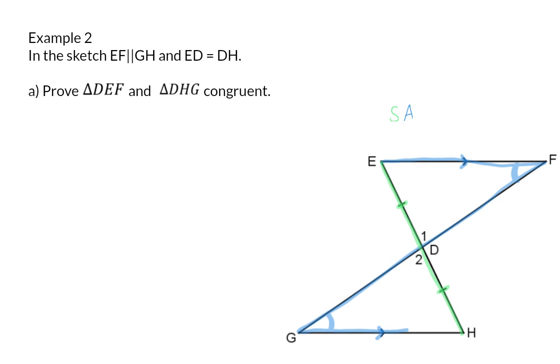For the third requirement, you now have more than one option. You can either use alternate angles again to say that angle E is the same size as angle H, and then we have another pair of angles, or you can have vertically opposite angles, and say that angle D1 is the same as angle D2 for another pair of angles.